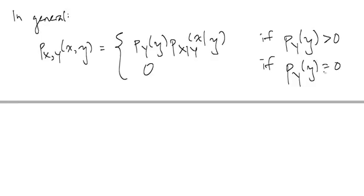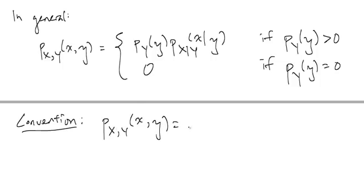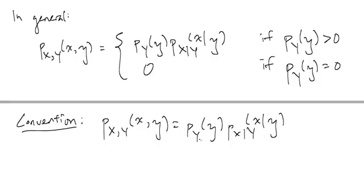An important convention we will be using throughout the class — and this is very important — is that typically we will just write the top case: the joint equals P(Y)(little y) times P(X|Y)(little x | little y). We write this where we mean that if P(Y)(little y) is equal to zero, then this whole thing is zero, even though the conditional probability isn't actually defined. You can think of it as a slight abuse of notation. We'll ignore that fact because this whole thing will be zero anyways. We do this out of notational convenience because this keeps coming up and we don't want to always write out two cases to consider.